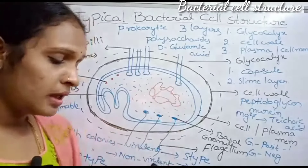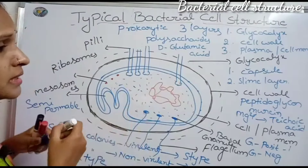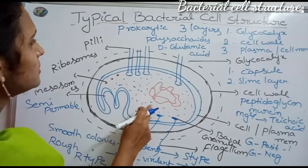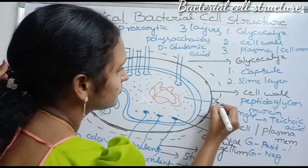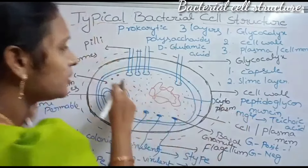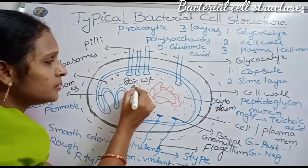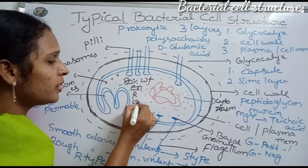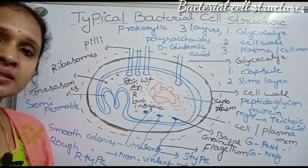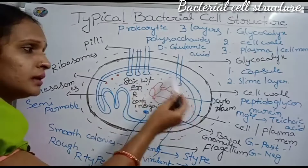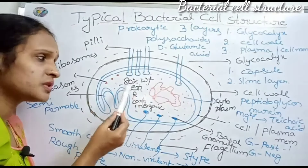The plasma membrane also protects the internal organelles. Inside the bacterial cell there is a liquid-like structure called the cytoplasm. The cytoplasm contains 80% water along with some enzymes, ribosomes, carbohydrates, and inorganic substances.